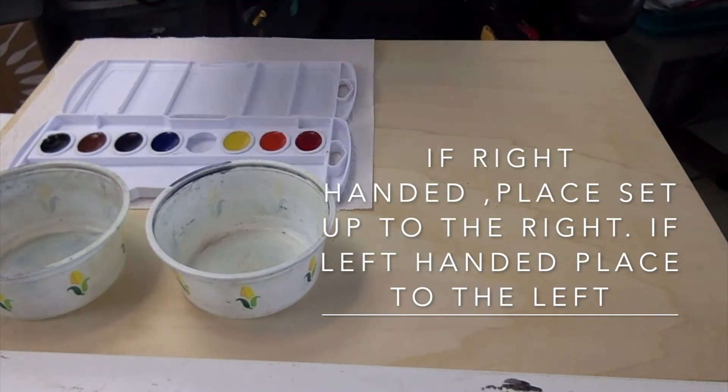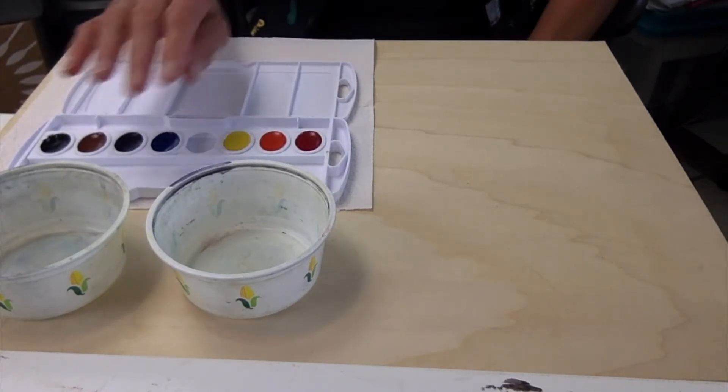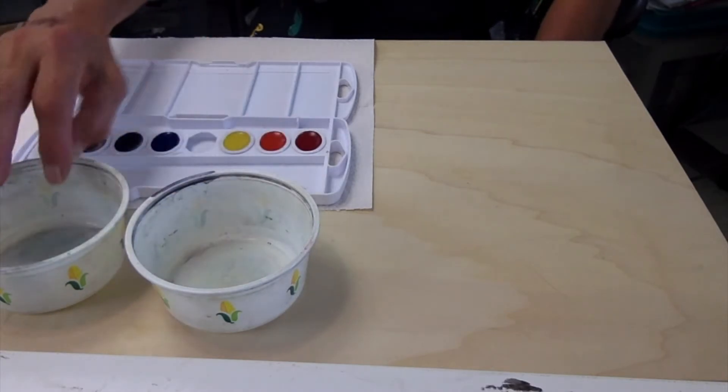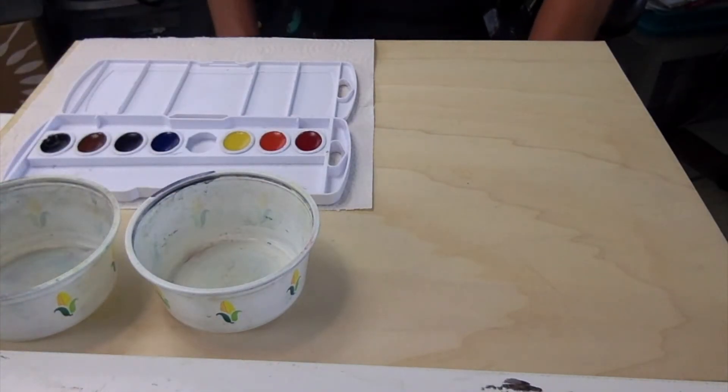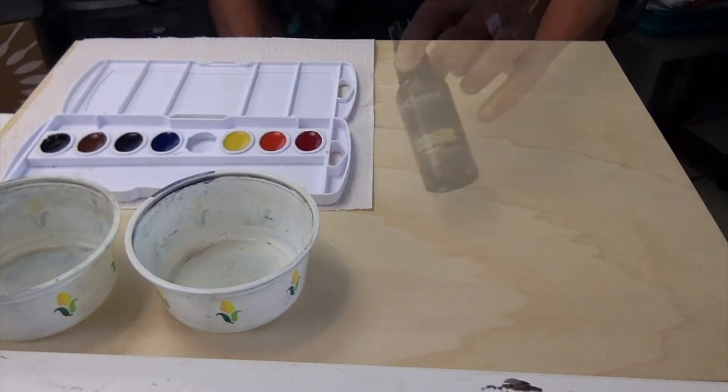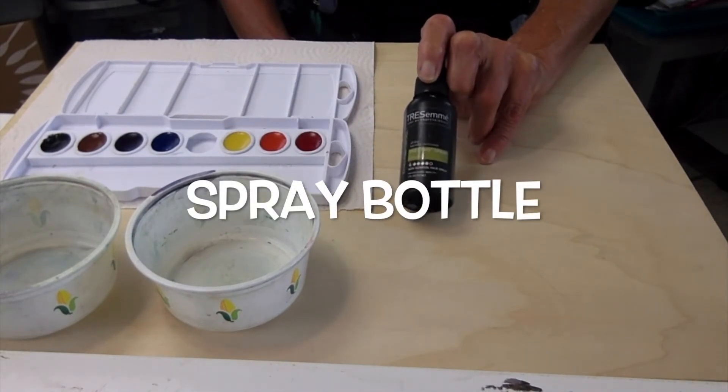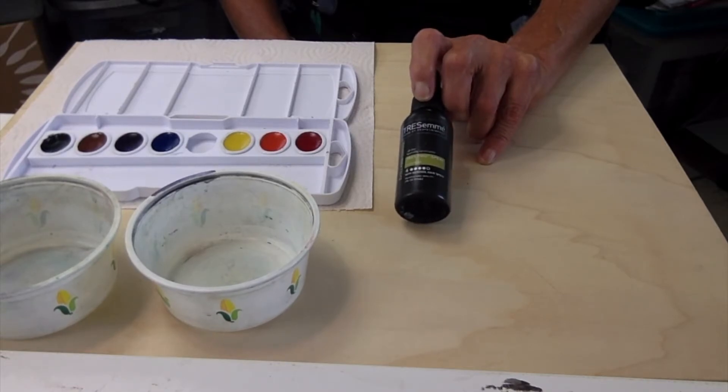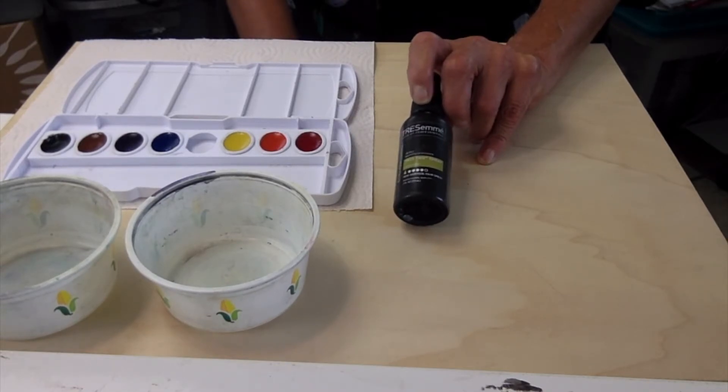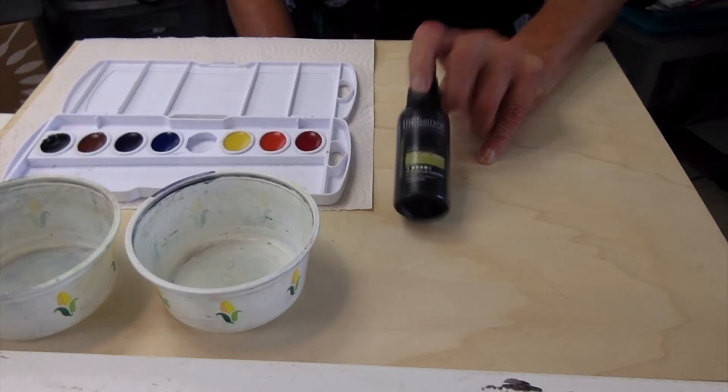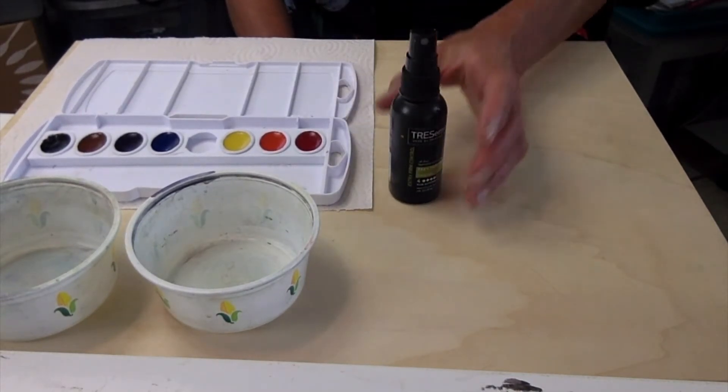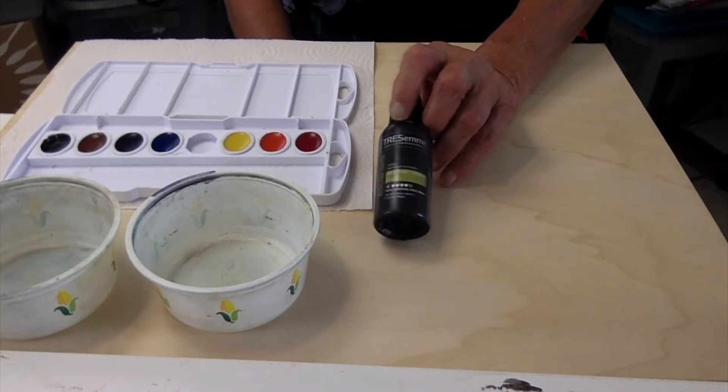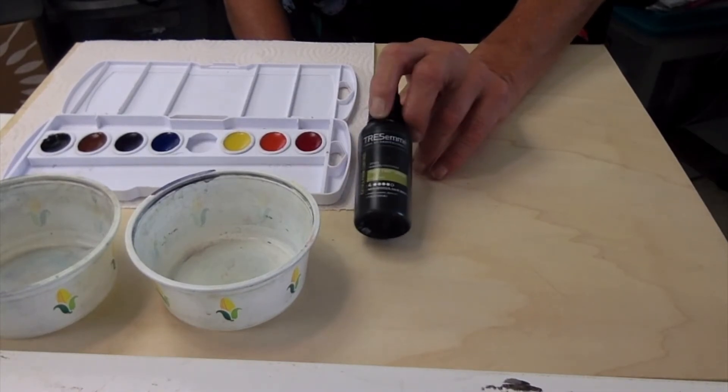Now my two containers of water are very simply put there because this water is for cleaning my brush and this water is for adding to my paint. Now this TRESemmé spray bottle is great. You'll find that when you get a larger painting going, you might want a larger spray bottle. But this is just great for this size painting. The size paintings that we're going to work on are 9 by 12.